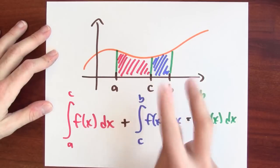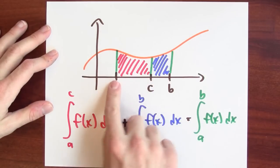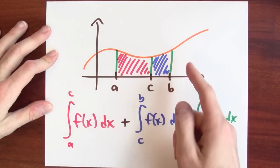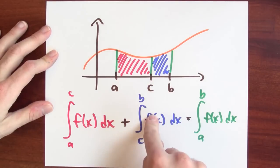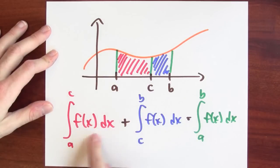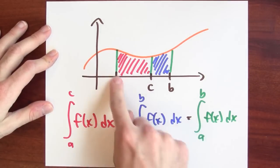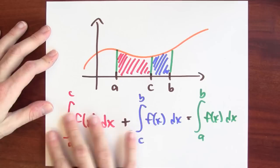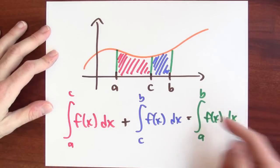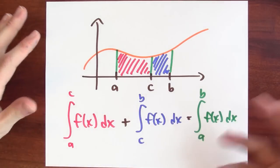But I could split that up into two separate integrals. I could integrate from A to C, that's this first red integral, and then I could integrate from C to B, that's this second blue integral. And if I add together those two areas, I get the total area from A to B. And that geometric fact is exactly what's written down here with symbols using our fancy integration notation.